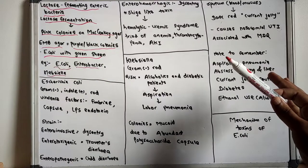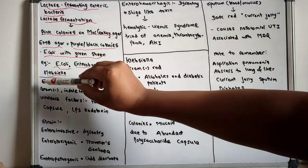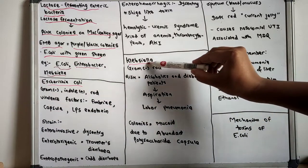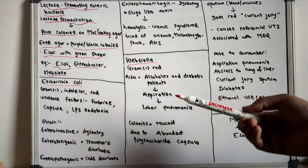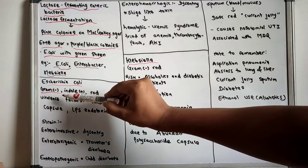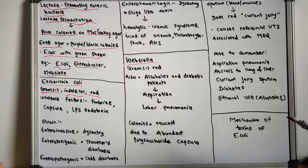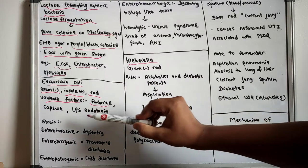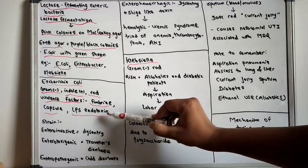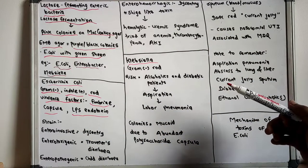Now let us discuss more detail about E. coli and Klebsiella. E. coli is gram-negative, indole positive rods, and the various virulence factors of E. coli are fimbria, capsule, and lipopolysaccharide endotoxin.